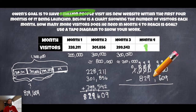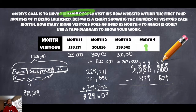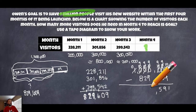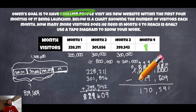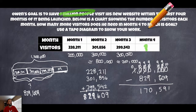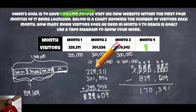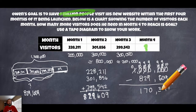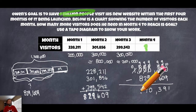Now I could subtract: 10 minus 9 is 1. Then 9 minus 0 is 9. Then 9 minus 6 — wait, I made a mistake: 9 minus 6 is 3, not 5. Even me, after setting up the problem correctly and following all the right steps, I still made a silly arithmetic mistake. So that's why you go slow and pay attention. Then continuing: 9 minus 9 is 0, 9 minus 2 is 7, 9 minus 8 is 1. Our answer is 170,391.